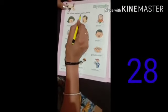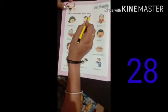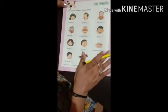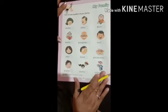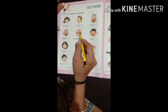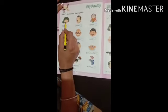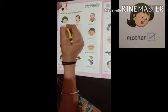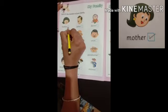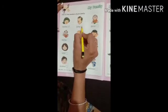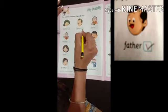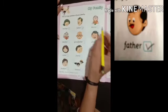Tick the members of your family. Yeh haa pe aapko kya karna hai? Aapke ghar me jo bhi family members hai, uus pe right tick karna hai. Mother hai na aapke ghar pe, toh right tick karna hai. Father hai na, father me right tick karna hai.